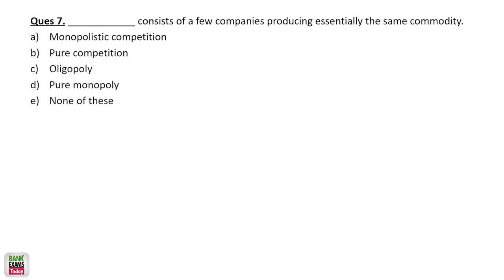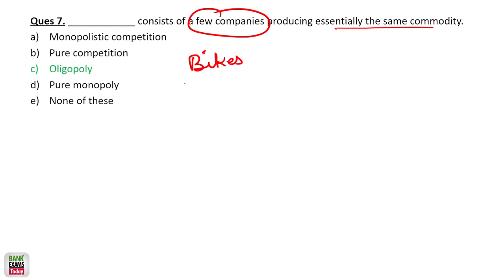Getting back to the question: 'Dash consists of few companies producing essentially the same commodity.' In the two-wheeler market, if you look at 100cc bikes, everybody is essentially making similar kinds of products but there are very few companies — Bajaj, Hero. Similar products, but few sellers and manufacturers. So that is known as oligopoly.